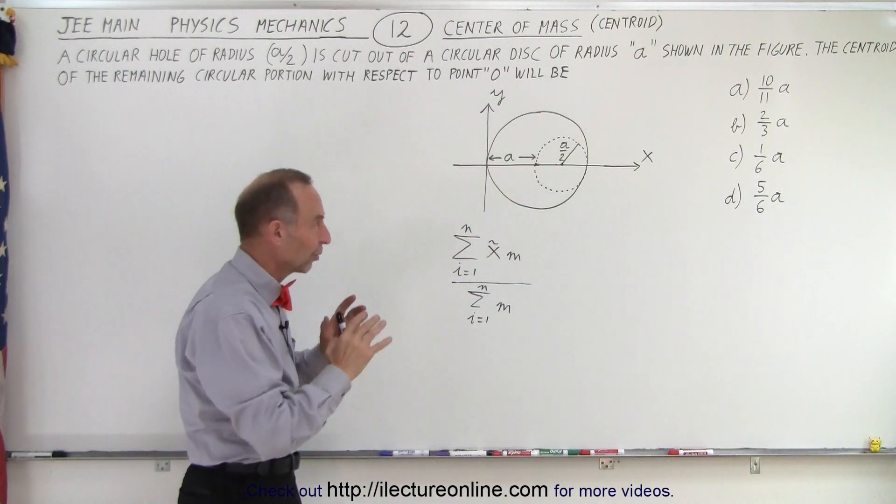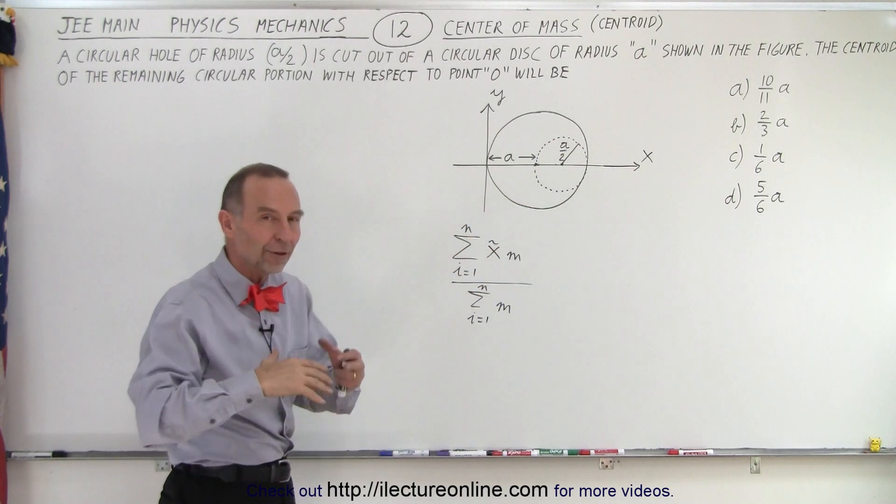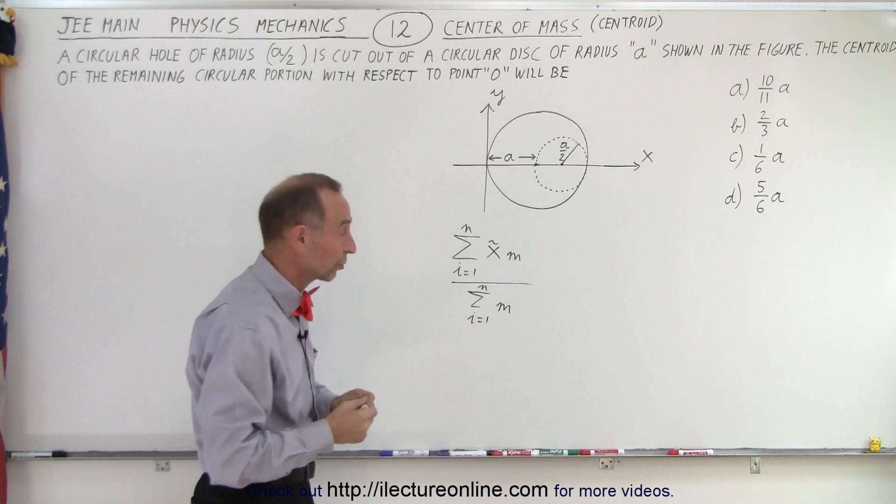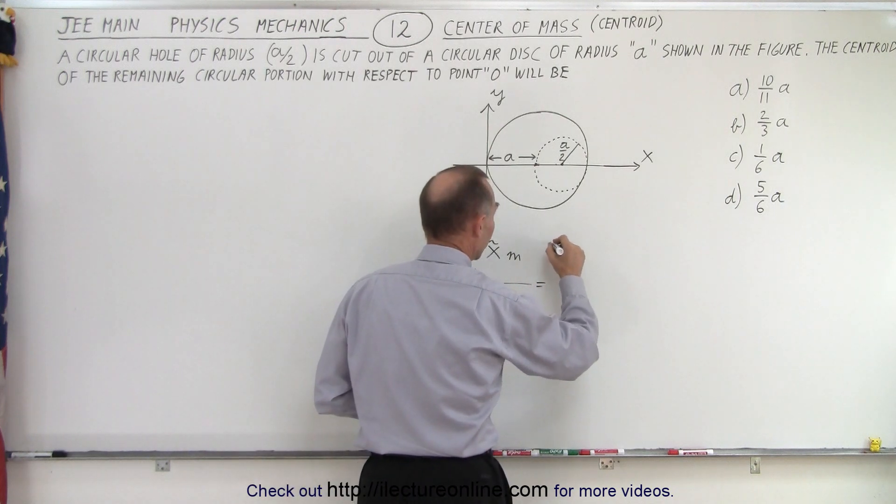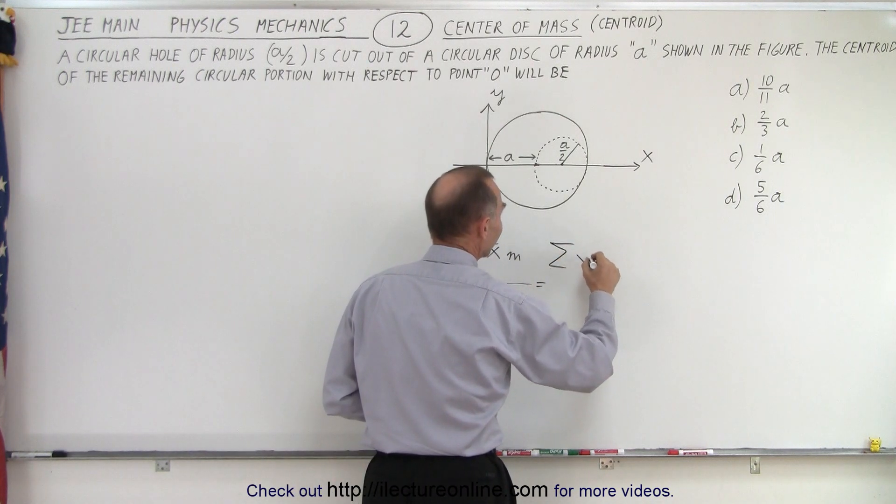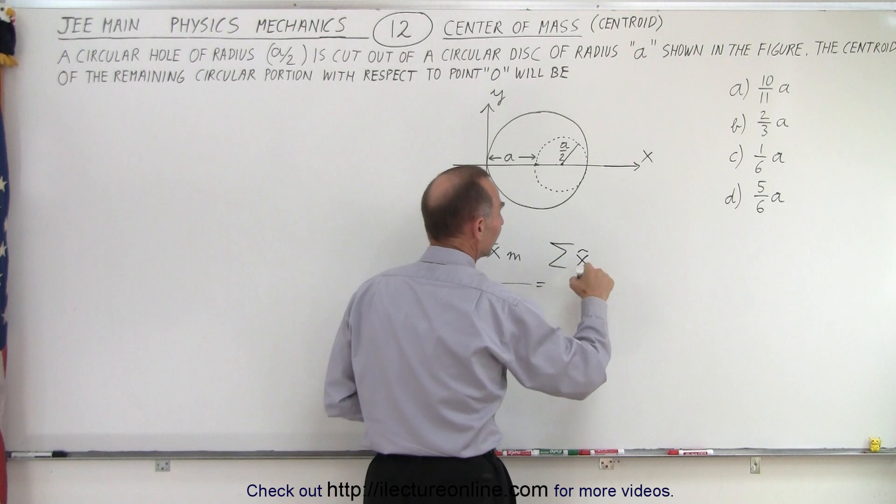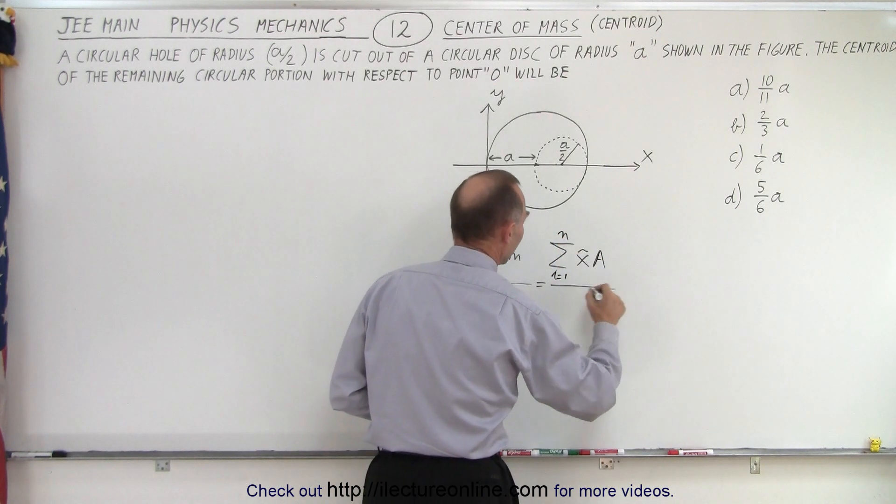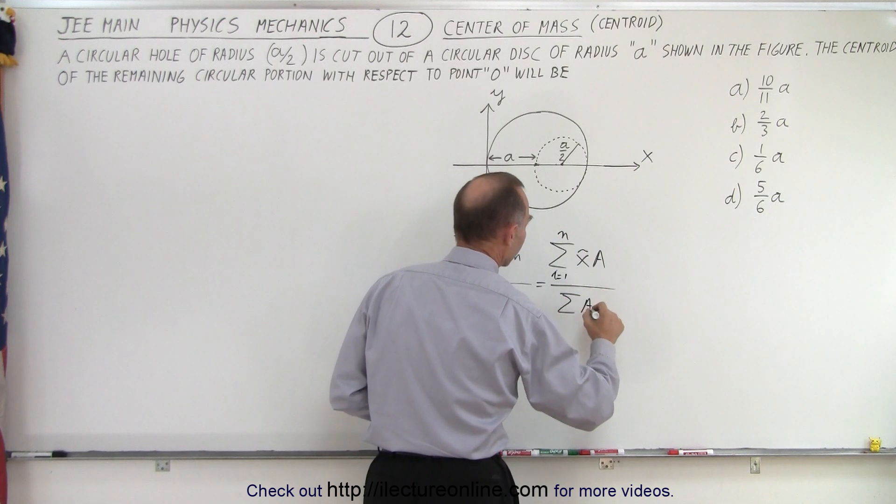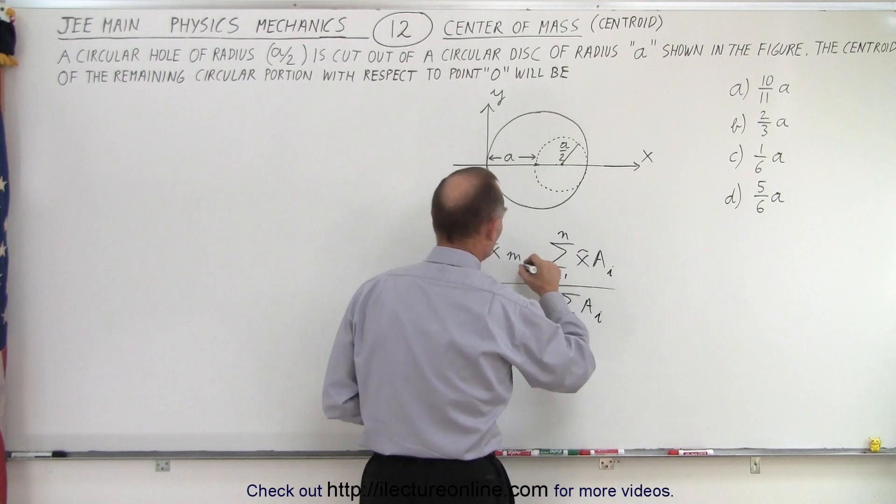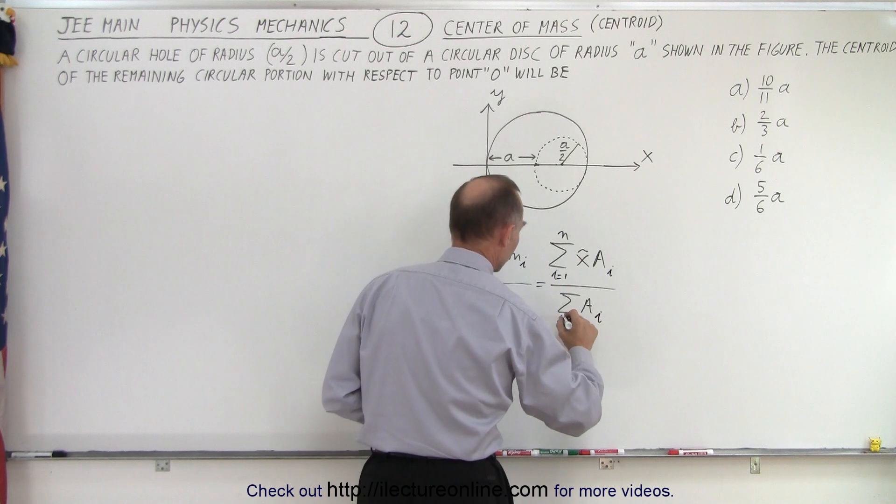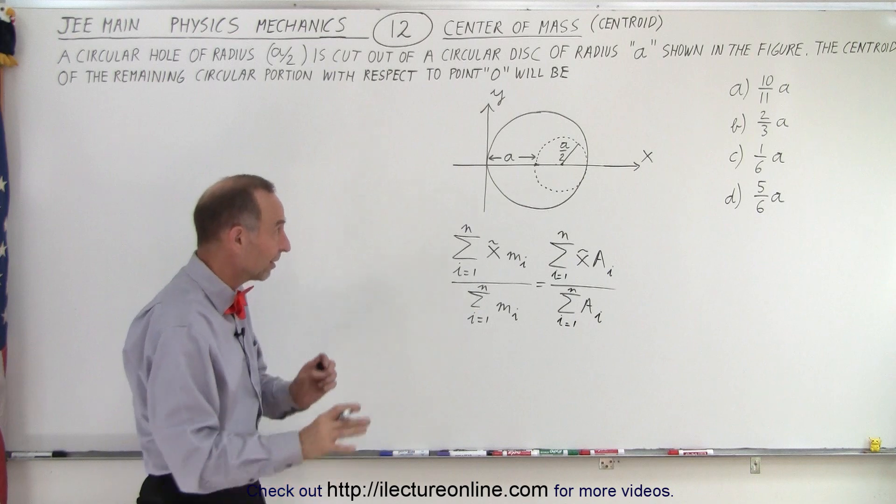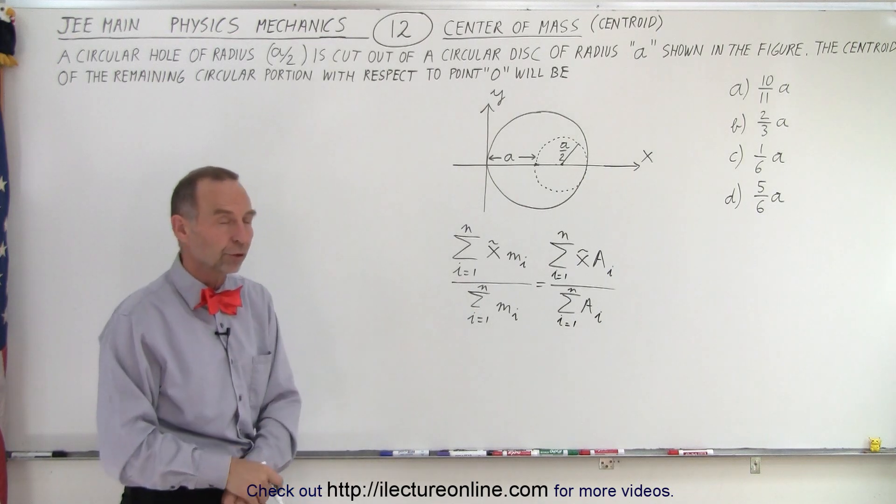Now, they don't give us the masses of those pieces, so instead of using the masses, since there are disks, we can use the area instead of the masses, which works as well. So this becomes equal to the sum of all the centroids of the individual pieces times the area of each piece, added up from 1 to n, divided by the sum of all the areas. We can use areas instead of mass, because the mass is proportional to the area.